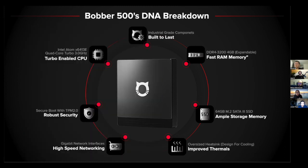Consumer grade hardware is for everyday use like home routers and phones. Enterprise grade is higher quality, built for heavier use and longer life — server hardware that businesses rely on for uptime. Industrial grade is a step higher — built to withstand extreme operating environments, used in factories and military applications. The Bobber 500 was built with industrial-grade components because these setups need to last a very long time.